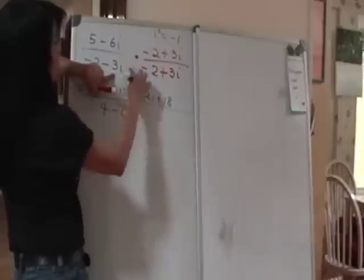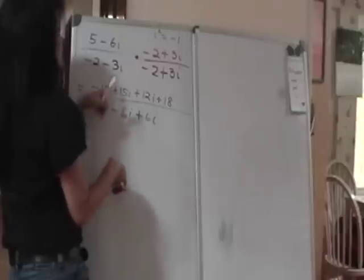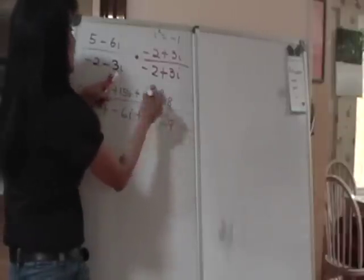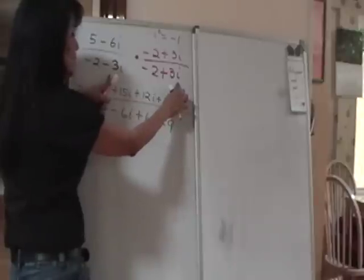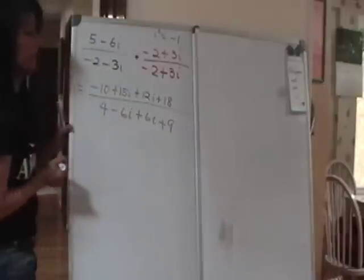Distribute the negative 3i to the negative 2. Negative times negative is positive 6i. So distribute the negative 3i to the positive 3i, you'll get negative 9. i times i is i squared. i squared being negative 1. Negative 9 times negative 1 will become positive 9.